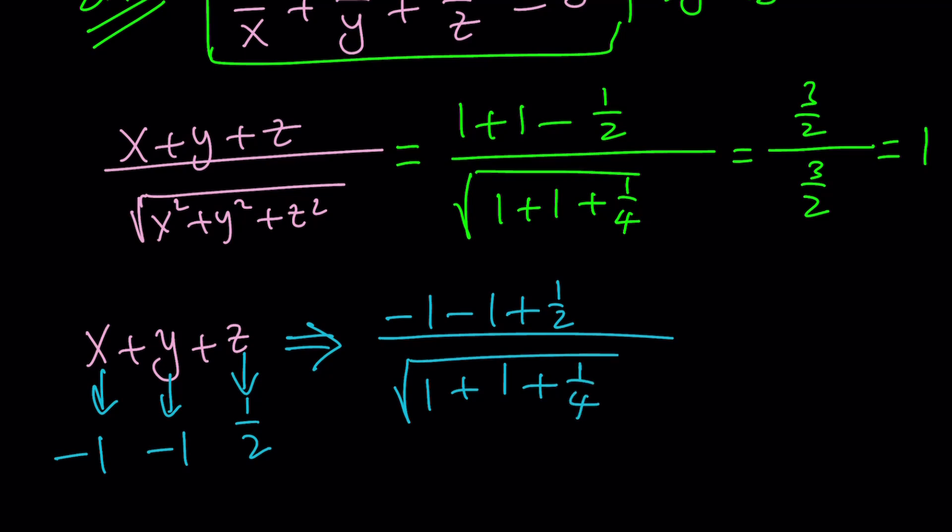The numerator, though, is going to be negative 2 plus 1 half, which is going to be the opposite of this, which is negative 3 halves. And the denominator is always 3 halves, which means the answer is going to be negative 1. So it looks like both answers are possible depending on which values you pick for x, y, and z. There are two possible solutions for this expression, and those are positive 1 and negative 1.